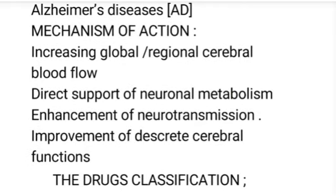The mechanism of action of nootropics involves increasing global or regional cerebral blood flow. Global means completely — blood circulation throughout the entire brain. Regional means at a single or particular position where there is a loss of blood flow — that is increased by the mechanism of action of the cerebral drugs.